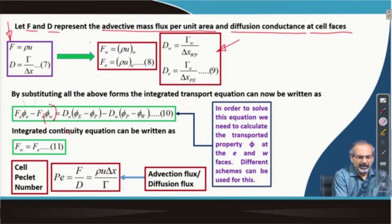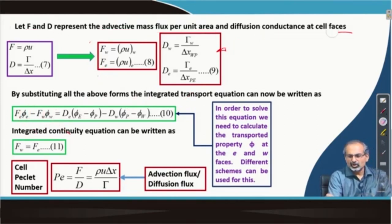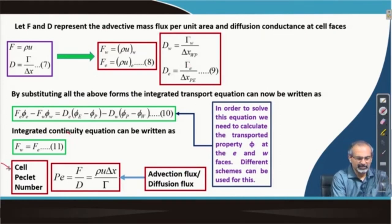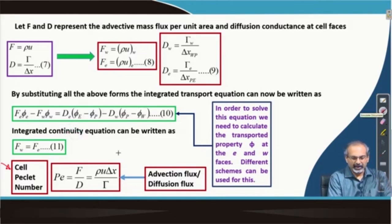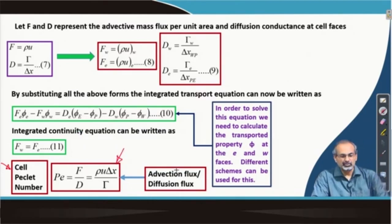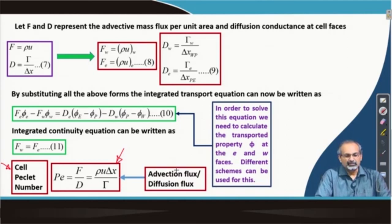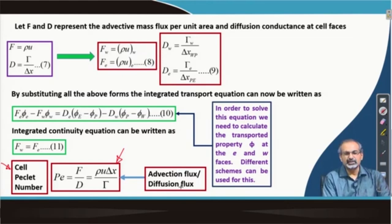Now that we have defined F and D, we come up with the definition of a very important non-dimensional number called the cell Peclet number. The cell Peclet number is defined as the ratio of F and D, which works out to be rho u delta x divided by gamma. Since we use cell dimensions for calculating D, we call it the cell Peclet number. It is simply a ratio of the advection fluxes to the diffusion fluxes.